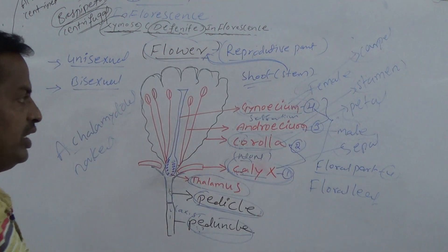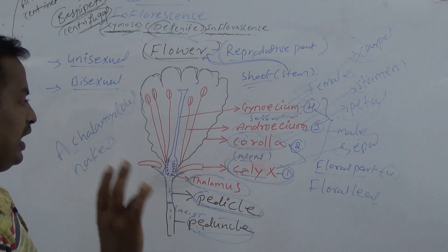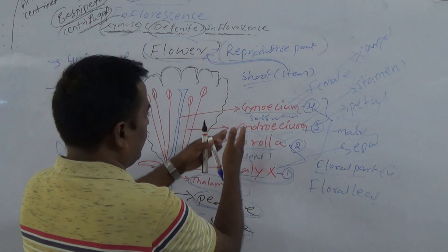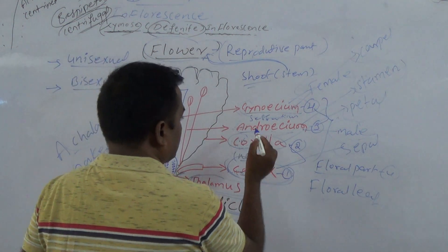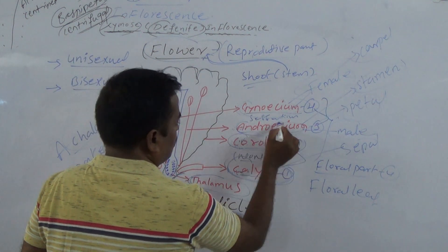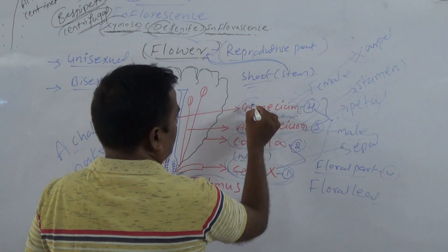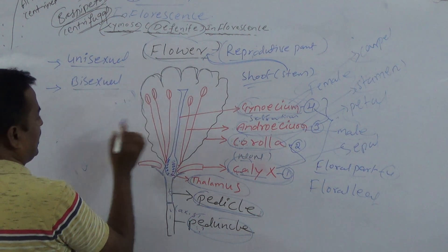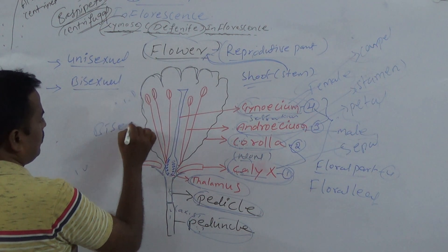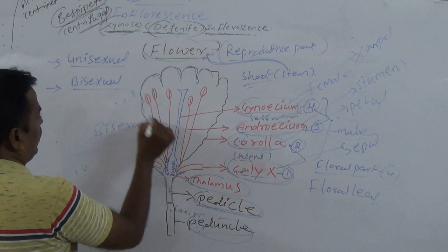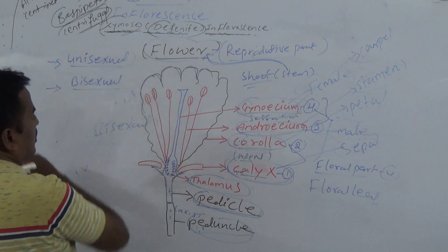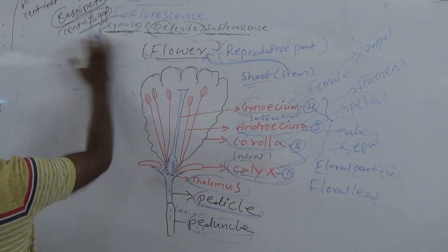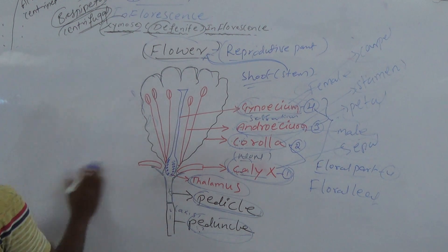How many floral parts are there? Four: Calyx, Corolla, Androecium, and Gynoecium. The flower shown is a bisexual flower. Why is it bisexual? Because both the male reproductive part, Androecium, and the female reproductive part, Gynoecium, are present. Such a flower is called a bisexual flower. Unisexual flowers are also present — unisexual means only one reproductive part is present.